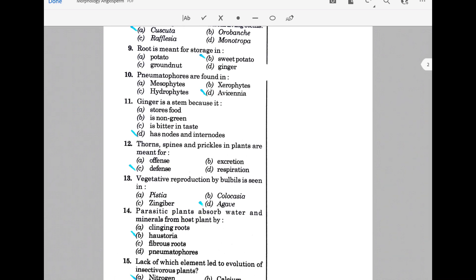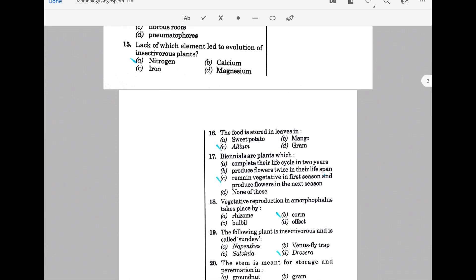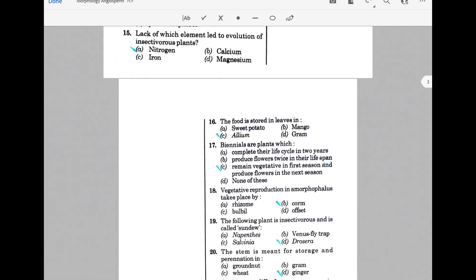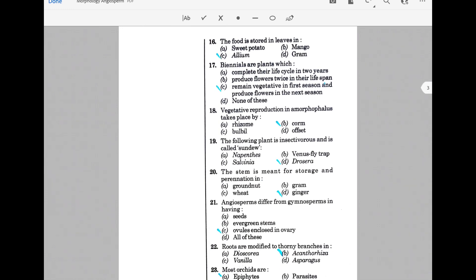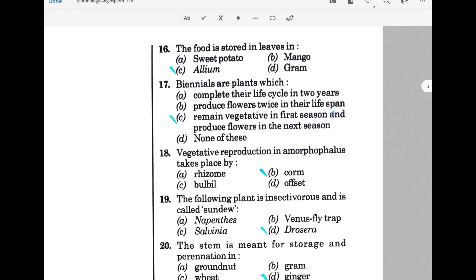Vegetative reproduction by bulbils is seen in Agave. Parasitic plants absorb water and minerals from host plants by haustoria. Lack of iron led to evolution of insectivorous plants. The food is stored in leaves in Allium.